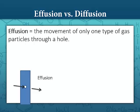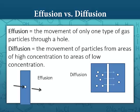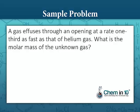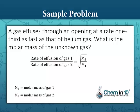So let's go back to our problem. A gas effuses through an opening at a rate one-third as fast as that of helium gas. What is the molar mass of the unknown gas? Here is our equation: the rate of effusion of gas one divided by the rate of effusion of gas two is equal to the square root of the molar mass of gas two over the molar mass of gas one.